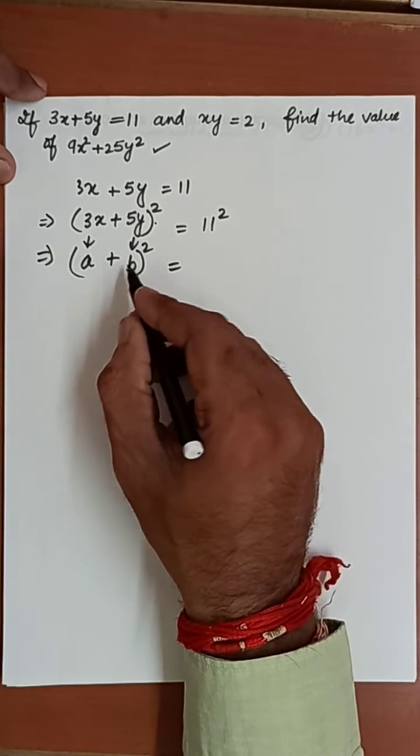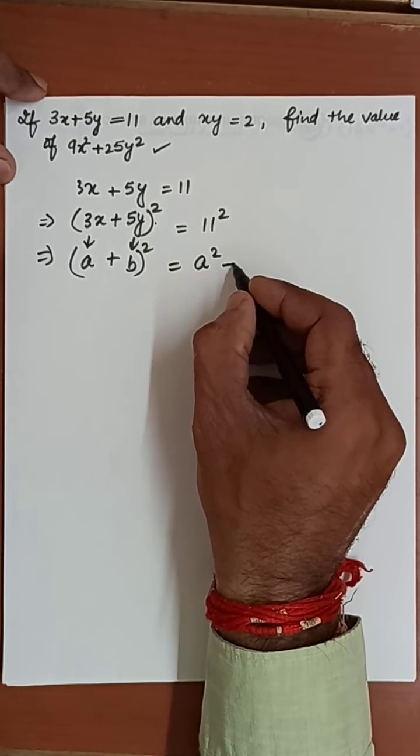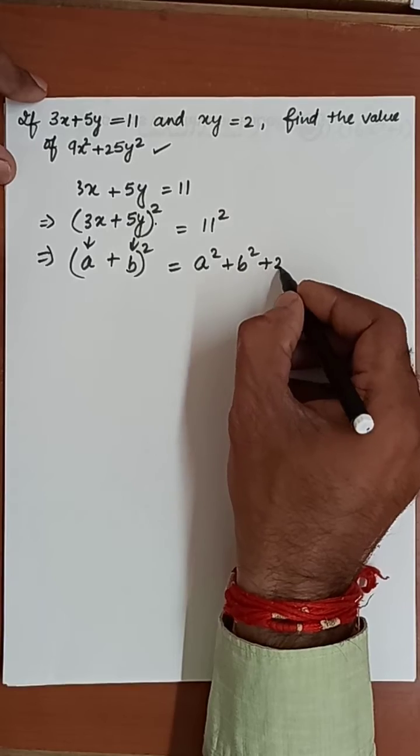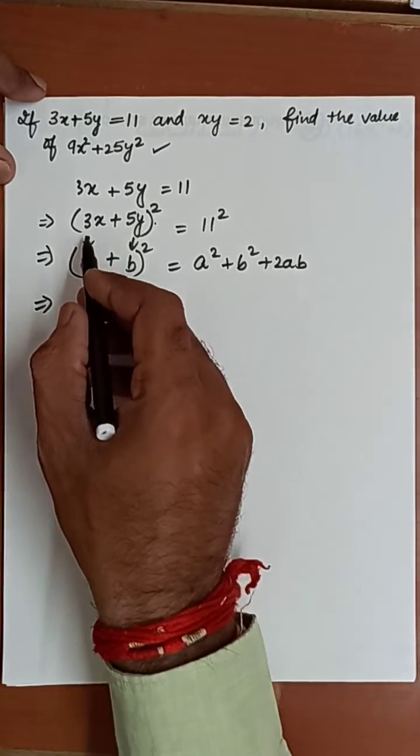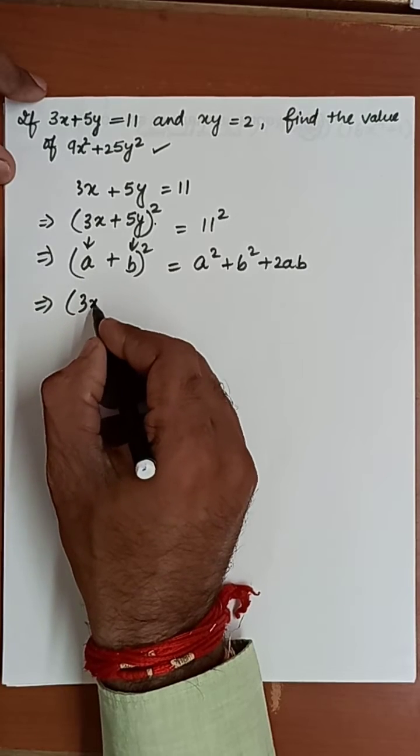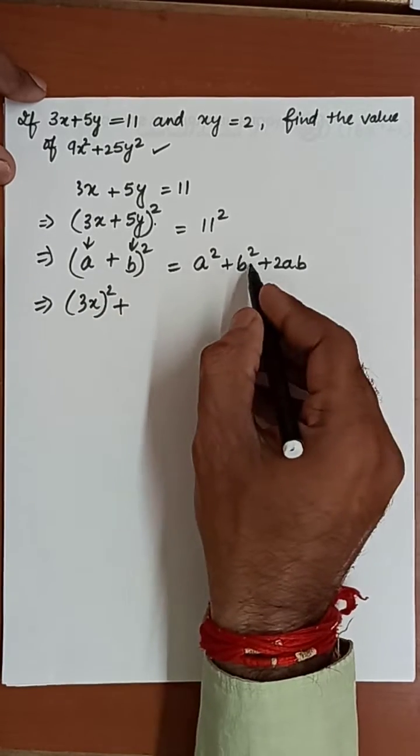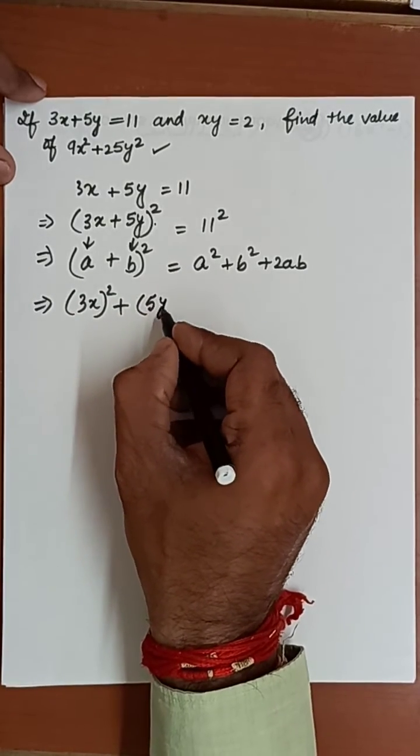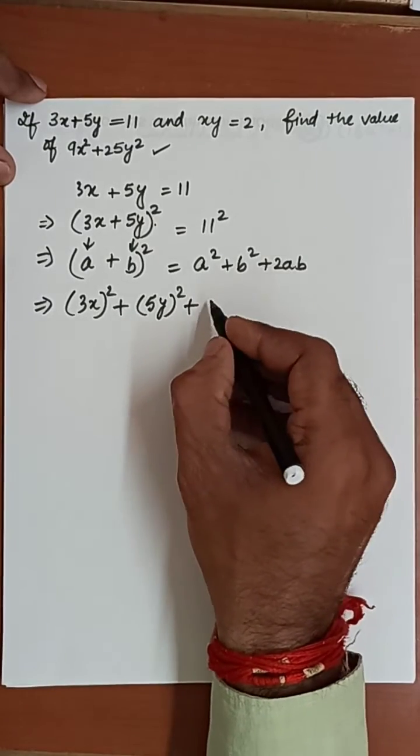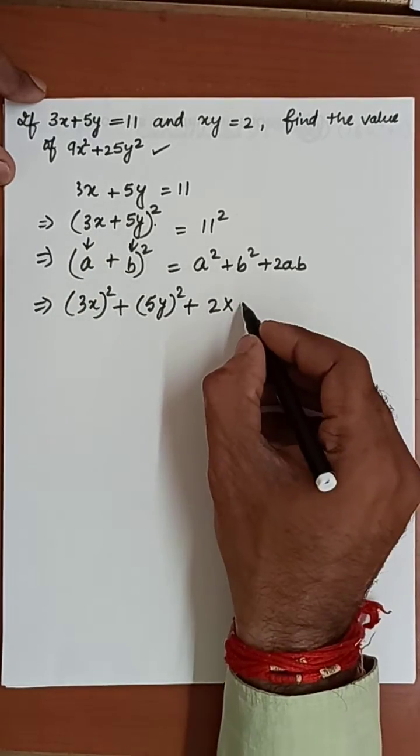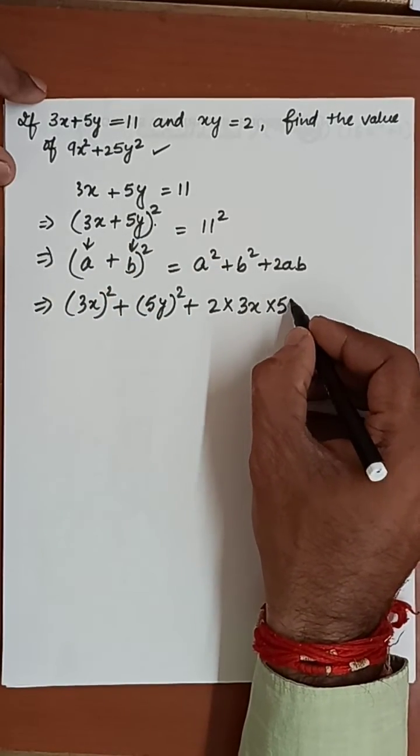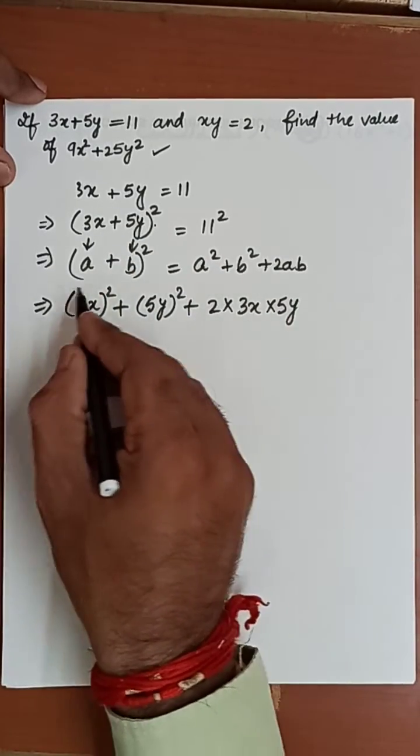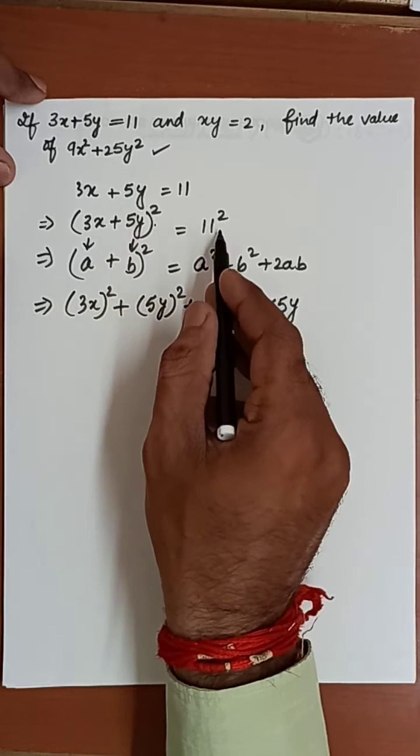Here we can change it as a square plus b square plus 2ab. So now a square, that is 3x square, plus b square, that is 5y square, plus 2ab, so that is 2 into the first term 3x into b, the second term 5y. This is the expansion of the left hand side equals the right hand side, 11 square, which is 121.